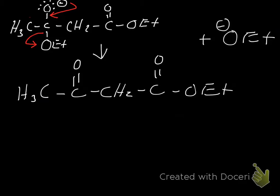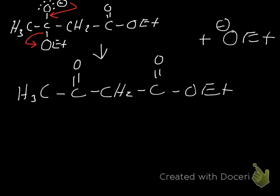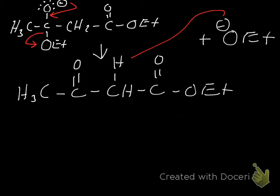Next step: the ethoxide in solution is going to attack one of the hydrogens in this molecule — specifically one of the hydrogens between the two carbonyls. We rewrite that portion as a CH with an H shown. The ethoxide attacks that hydrogen, and those electrons go back onto the carbon, giving us another carbanion.